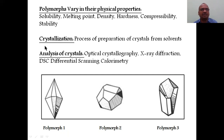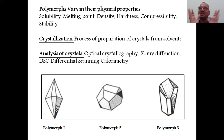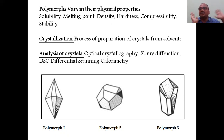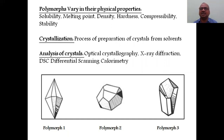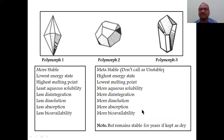Physical properties that vary include: solubility, melting point, density, hardness, compressibility, and stability. Crystallization is the process of preparing crystals obtained from solvents — supersaturation of a solution leads to crystal formation. Crystal analysis methods include optical crystallography, X-ray diffraction studies, and DSC — differential scanning calorimetry.